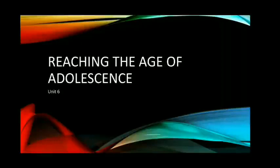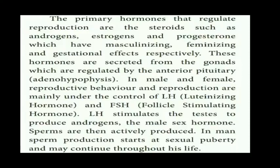In the previous session we have learned about hormones. Today we are going to study about the role of hormones in reproduction. We know the hormones are chemical substances secreted by the endocrine glands. These endocrine glands will release the hormones into the blood stream to reach a particular body part called target site. The target site responds to the hormones.